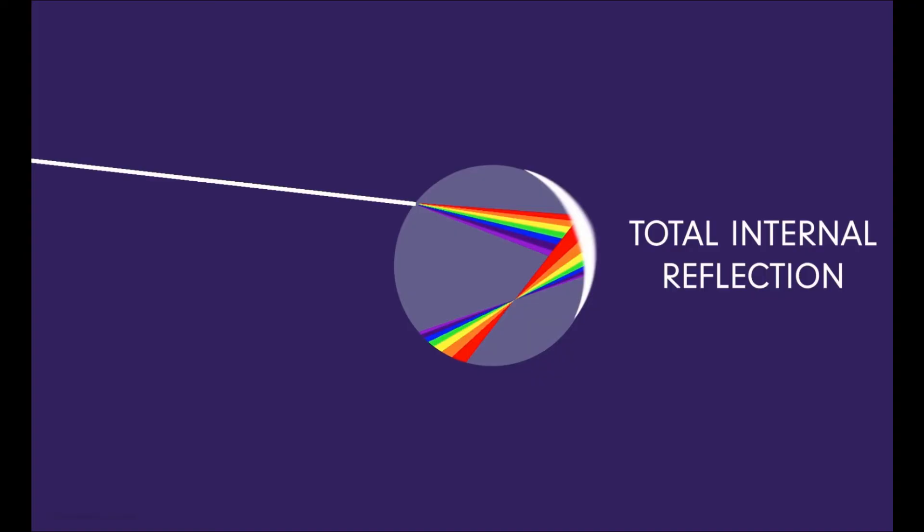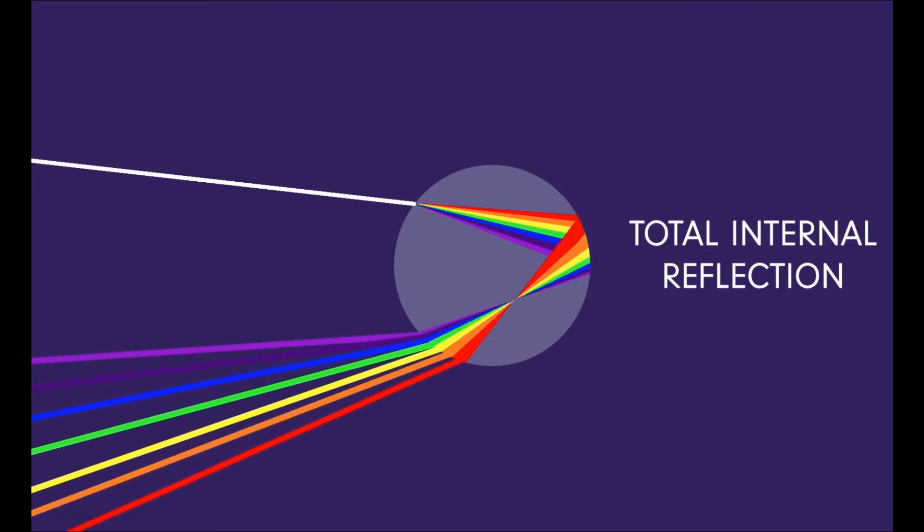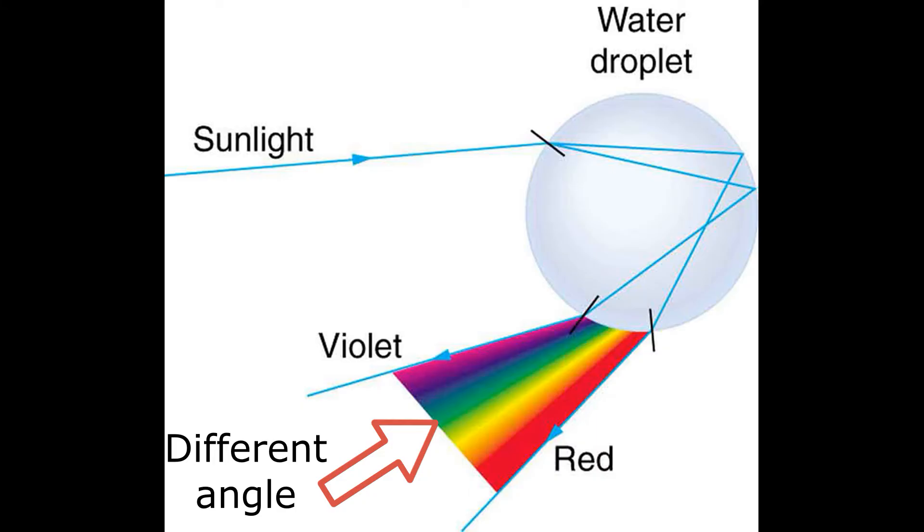The same way in a raindrop, the light doesn't pass through it but gets internally reflected. This time it bends in air, that is it passes through the raindrop. When they pass through, each color gets reflected at a different angle.